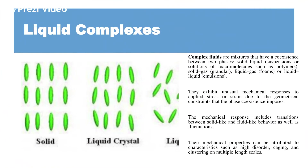Next we move on to liquid complexes. As discussed in my previous session, there are broadly three states of matter: solid, liquid, and gas. But when one phase changes into another, this change does not happen abruptly — it is a very slow phase transition. The intermittent stages during this transition have their own set of properties.